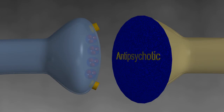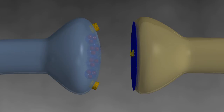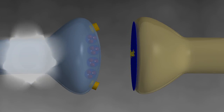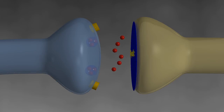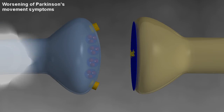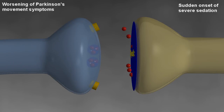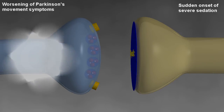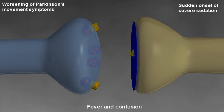Antipsychotics function by blocking the postsynaptic dopamine receptors in the brain. As such, in a patient with a dopaminergic-mediated dementia such as dementia with Lewy bodies, this class of medication can result in severe side effects including worsening of Parkinson's-associated movement disorders, sudden onset of severe sedation inducing a catatonic-like state, and possibly fever and confusion. Likewise, the standard treatment for the movement disorders of Parkinson's — levodopa — can exacerbate the visual hallucinations and paranoia of the dopaminergic-related dementias.